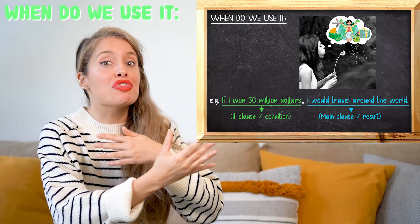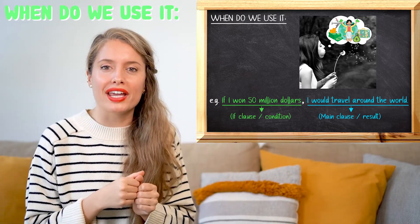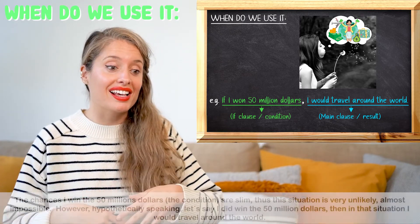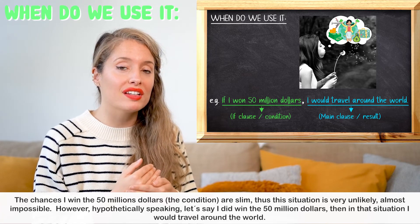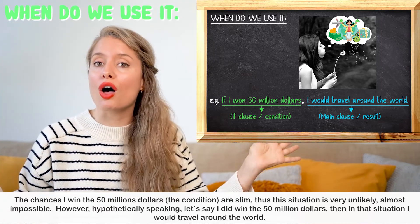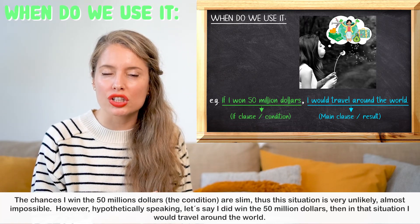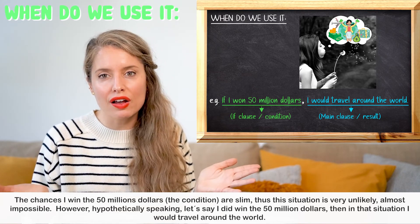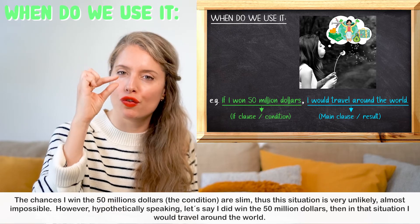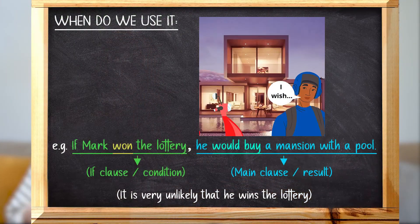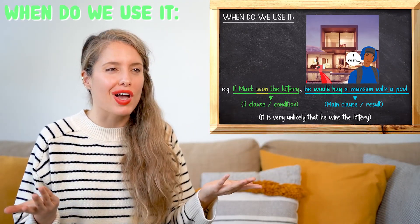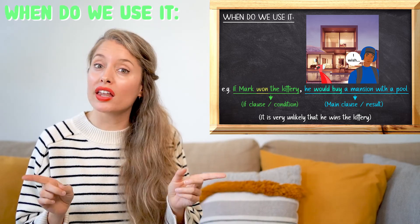Hypothetically speaking, if I did win those $50 million, and that condition happened, then possibly I would travel around the world. But is it likely? No — it's an unlikely, almost impossible situation. The chances are very slim. For another example: 'If Mark won the lottery, he would buy a mansion with a pool.' Is it likely that Mark wins the lottery? No — very unlikely.